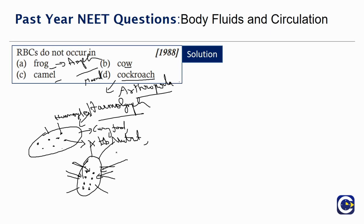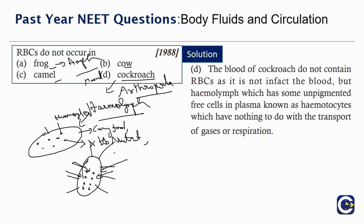The blood of cockroach does not contain RBCs — it is in fact Hemolymph, which has unpigmented free cells in the plasma known as Hemocytes, which have nothing to do with transport of gases or respiration. So the answer is Cockroach.